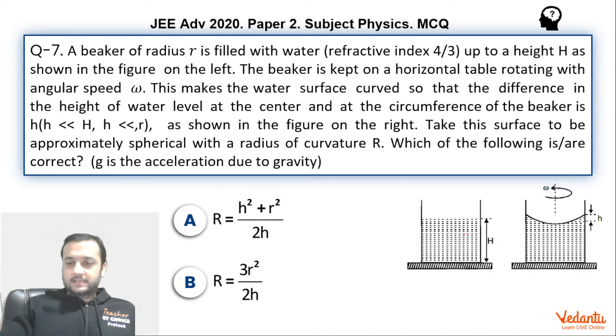Here we have a container which has a liquid filled up to the height H. The refractive index of the liquid has been given 4 by 3. Now we start rotating this liquid at an angular velocity of omega. So it is given that the top surface of the liquid acquires this type of shape, which is assumed to be spherical. Although we know that in reality this surface is paraboloid in 3D and the cross section of which is a parabola. So further it has been given that difference in the height between this top point and the base is h. h is super small as compared to small r, this is small r and capital H.